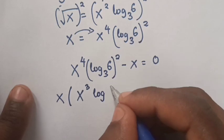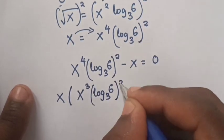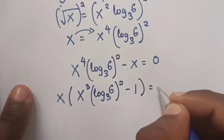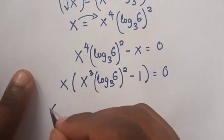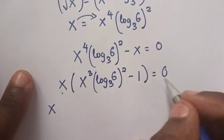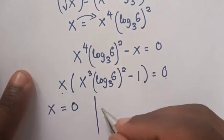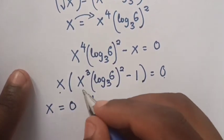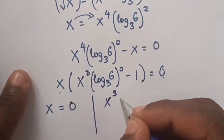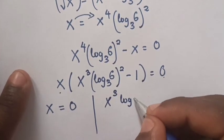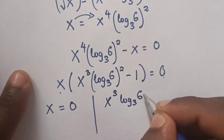Now here x is equal to 0. And for the inside of the bracket, we take negative 1 to the left side, so x power 3 log 6 base 3 bracket squared is equal to 1.